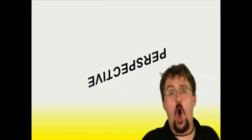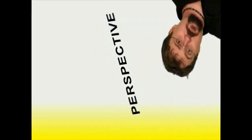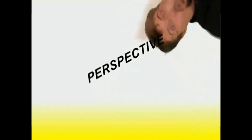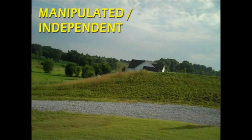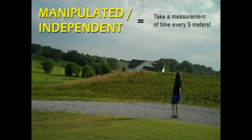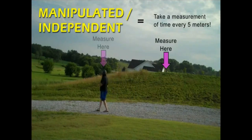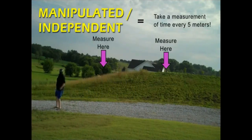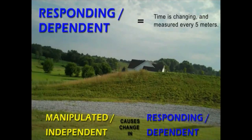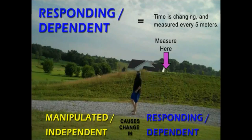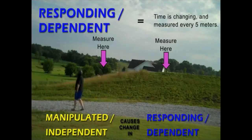And this is all about perspective. Time isn't always going to be the independent variable, and distance is not always going to be the dependent variable — it all depends on how you set it up. So if we turn it around, we can choose to manipulate distance and measure time every 5 meters. By choosing to manipulate distance, the distance variable becomes independent — it's not affected by how much time has passed. And because of that choice, time is now responding or dependent on the distance measurement.